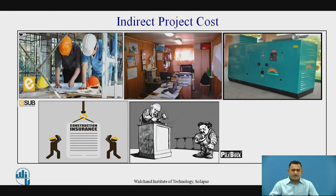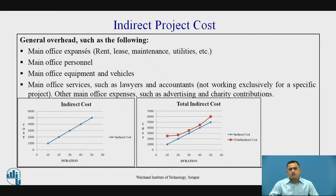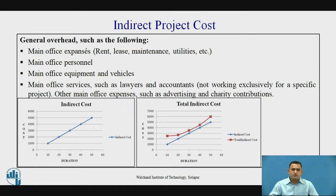Delay-related indirect cost may be in terms of penalty as the project has been delayed. Some of the points mentioned in this slide show these are overhead costs associated with the particular project — main office expenses, site office expenses, equipment, vehicles, and services. Officer services which are not directly related to the project but are required, like lawyers or accountants, etc.